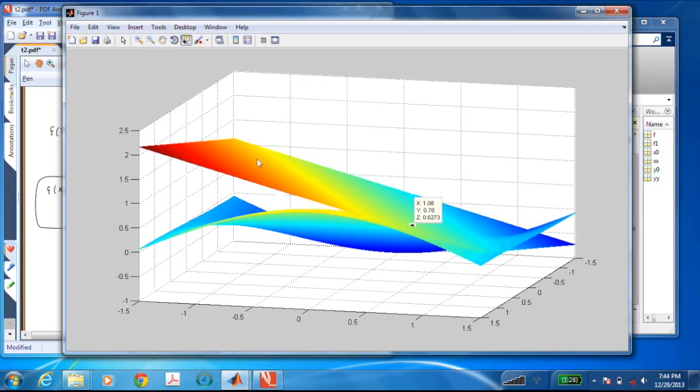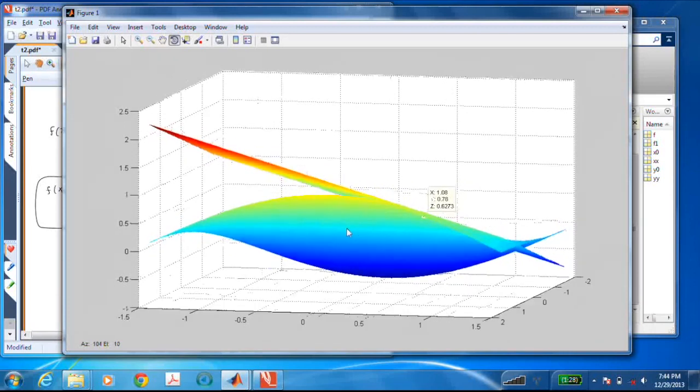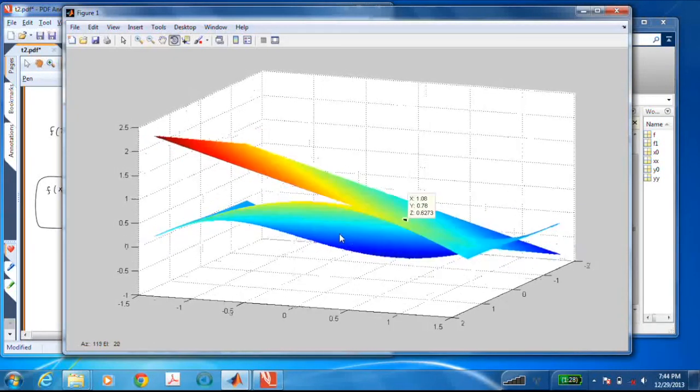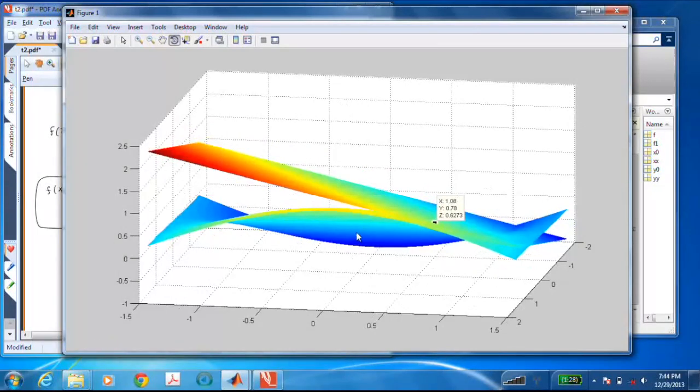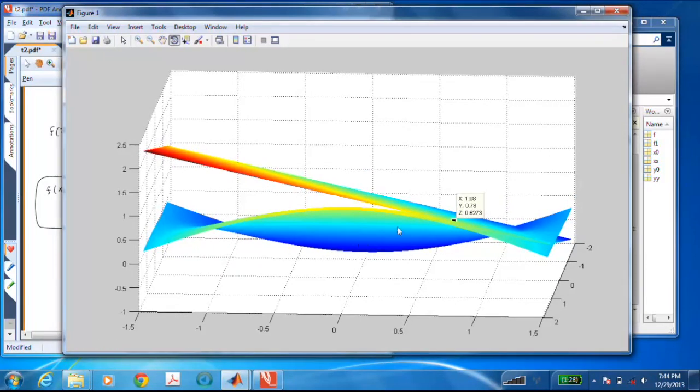So right about there is pretty close. And we can see that that plane, which is our linear function, is just about kissing the nonlinear function right at that point. So I think I just about got it. The interesting thing to note is how poorly that plane approximates the nonlinear function sine x times cosine y if you deviate even a little bit from that point we linearized about. So if you're out here somewhere, you're way off from the nonlinear function if you're using that plane to approximate it. But in the vicinity of that operating point, we do pretty well.